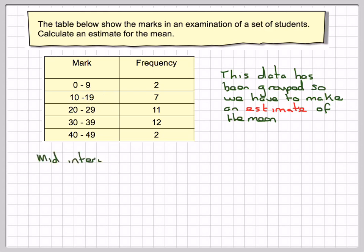What we do is take the mid-interval, which is 0 plus 9 divided by 2, giving us 4.5. Then we do the same for the next one: 10 plus 19 divided by 2, and then for all the other intervals.